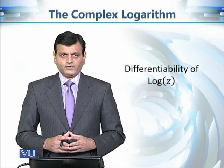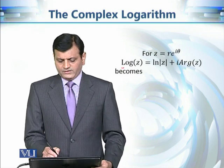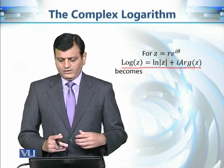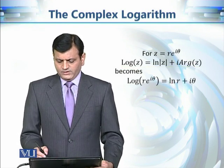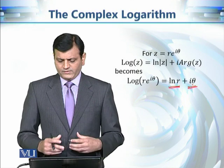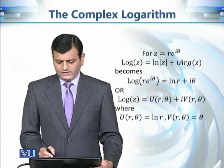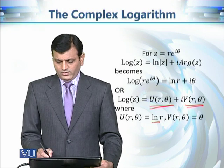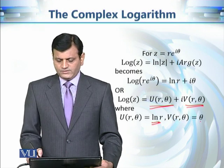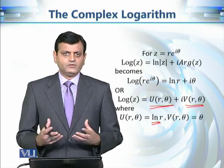Now let's discuss the differentiability of the principal logarithm. If we take z = re^(iθ), then we can write log of the modulus of z plus i times the argument of z, which becomes log(r) + iθ, where θ is the principal argument. We can write this as u(r,θ) + iv(r,θ), where u(r,θ) = log(r) and v(r,θ) = θ.